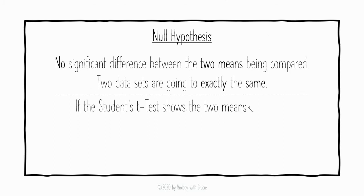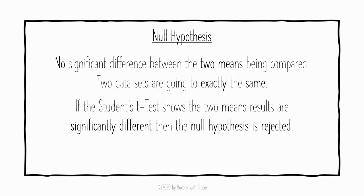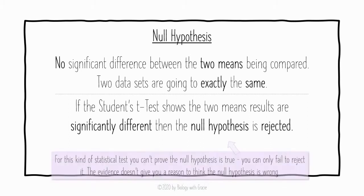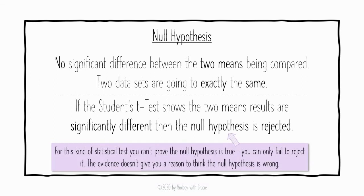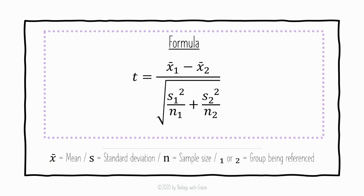If the Student's t-test shows that the two mean results are significantly different, then we can reject the null hypothesis. For this kind of statistical test — and for chi-squared as well — we can't prove that the null hypothesis is true; we can only fail to reject it. We don't have enough evidence to give us a reason to think the null hypothesis is wrong.